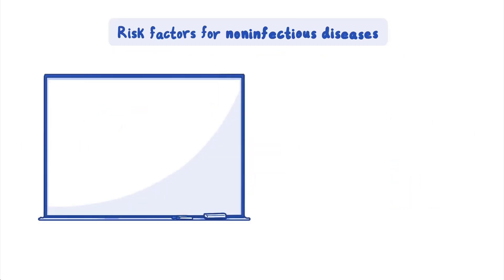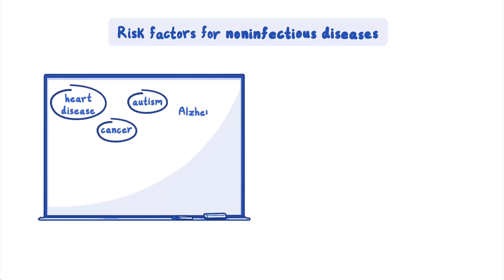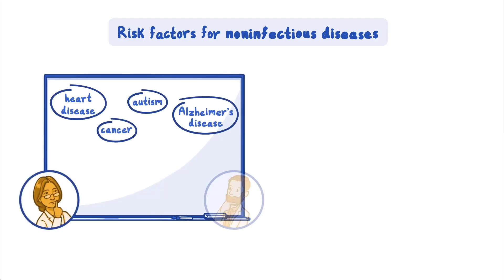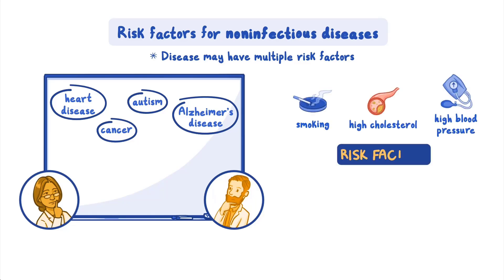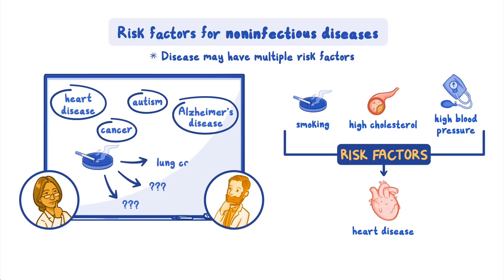Risk factors for non-infectious diseases like heart disease, cancer, autism, and Alzheimer's disease aren't as easy to determine. Often, a disease may have multiple risk factors. For example, cigarette smoking, high cholesterol, and high blood pressure are all risk factors for heart disease. Some risk factors, such as cigarette smoking, may be linked to multiple diseases.